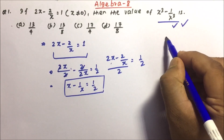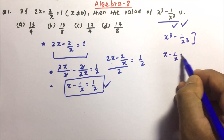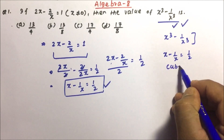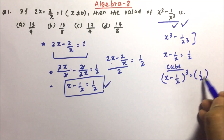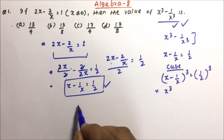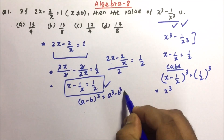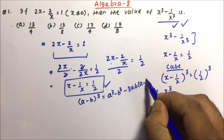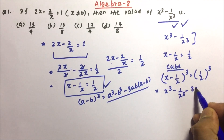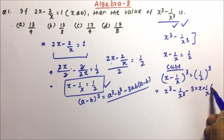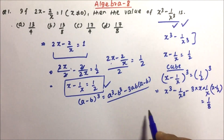Once you get this form, it is very easy to solve the problem. They are asking for x cube minus 1 by x cube, so we take cube on both sides. So (x minus 1/x)³ equals (1/2)³. The formula is: (a minus b)³ equals a cube minus b cube minus 3ab into (a minus b). So we expand: x cube minus 1 by x cube minus 3 times x times 1/x times (x minus 1/x) equals 1 by 8.